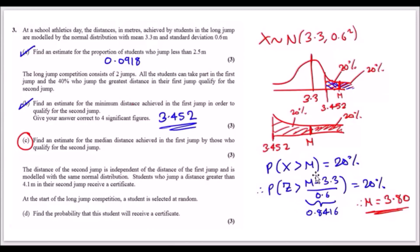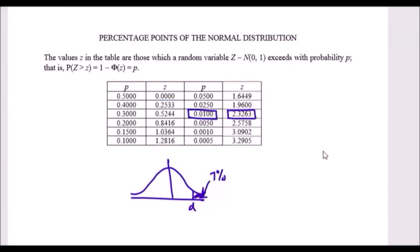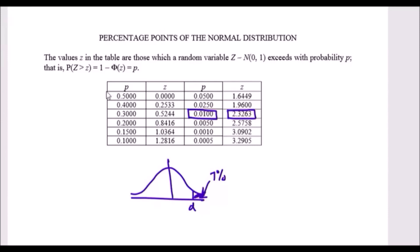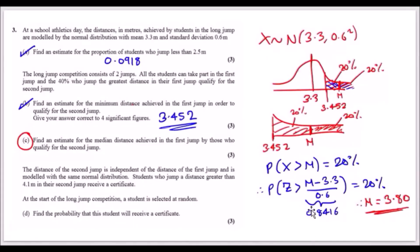Convert to Z-form: P(Z > (m − 3.3) / 0.6) = 0.20. Using the small table with p = 20%, the Z value is 0.8416. So (m − 3.3) / 0.6 = 0.8416, giving m = 0.8416 × 0.6 + 3.3 = 3.80.